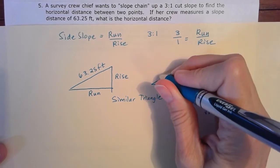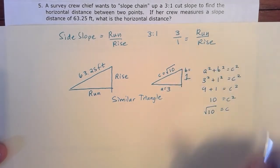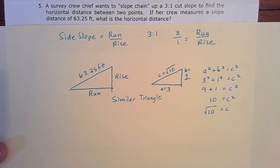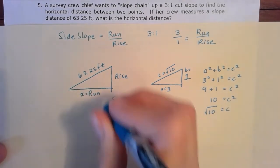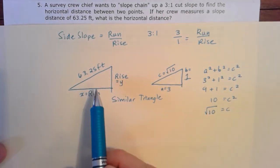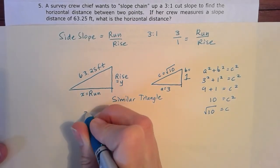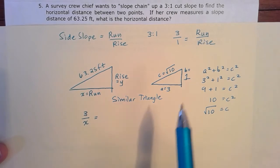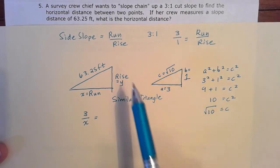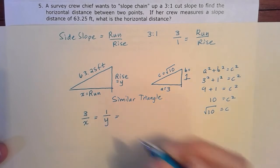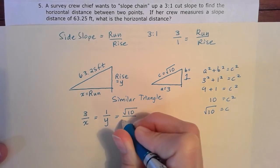So we'll call this leg C our hypotenuse, and we'll know that that's the square root of ten. So now we have two similar triangles that we can write down relationships about. So we can say that on one leg, the run is this unknown, and we'll just call this X, since it's in the X direction, and this rise is unknown, and we'll call that Y. So we can say because of similar triangles that X is similar to this three leg. So I'll put three over X, and then one is similar to this Y leg, one over Y. And then we can equate this hypotenuse, square root of ten, to our 63.25.